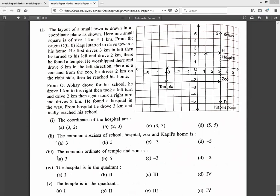Next, the common ordinate of temple and zoo—ordinate means y-coordinate. Tell me the y-coordinate of temple and zoo. Minus two. Yes, minus two, absolutely correct. That means option D.